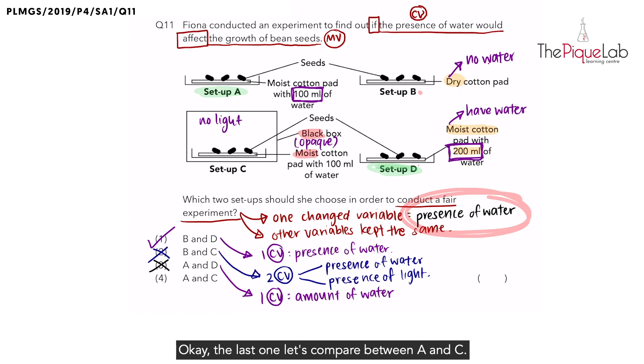The last one, let's compare between A and C. I'll use my red highlighter. I'm looking at A, I'm looking at C. Now same thing over here. In that case, both also have moist cotton pad. Both have 100 ml of water, but the only difference is that C is placed in a black box, A is not placed in a black box. So between the two setups, they also have one change variable.